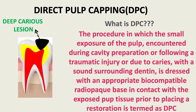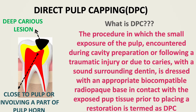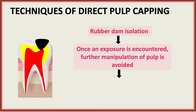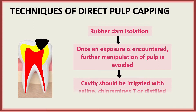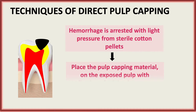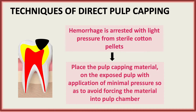Look at the figure — we have a deep caries lesion close to or involving a part of the pulp horn, with sound dentine around it. Techniques of direct pulp capping: first, rubber dam isolation is done. Once an exposure is encountered, further manipulation of the pulp is avoided. The cavity should be irrigated with saline, chloramine, or distilled water.